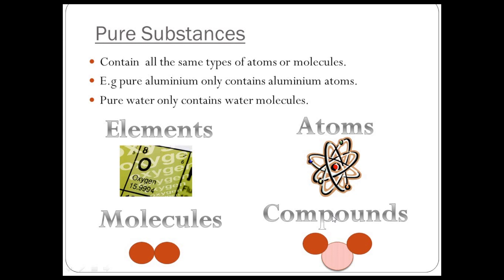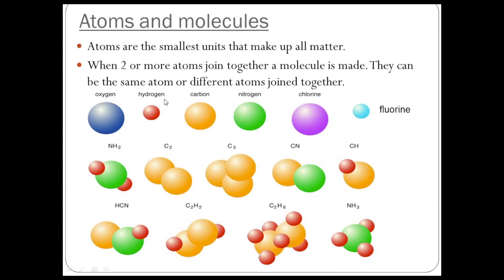You can play this slideshow over and over again. Atoms—these here: oxygen, hydrogen, carbon, nitrogen, chlorine, and fluorine—they are all existing on their own. Look, they're not joined to anything, so they are atoms. They are the smallest units that make up all matter. All matter, I mean solids, liquids, and gases.